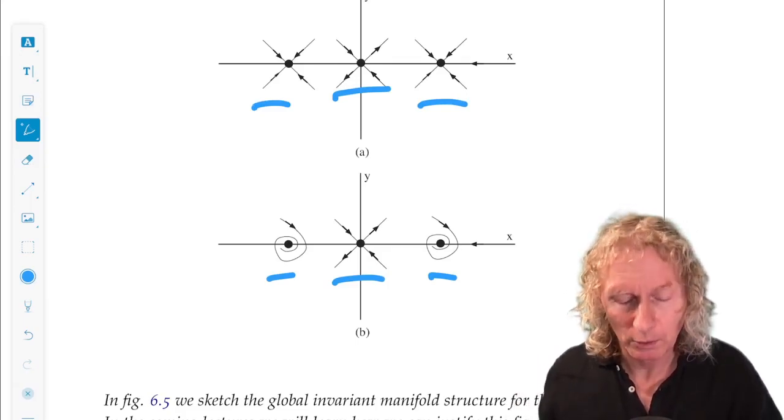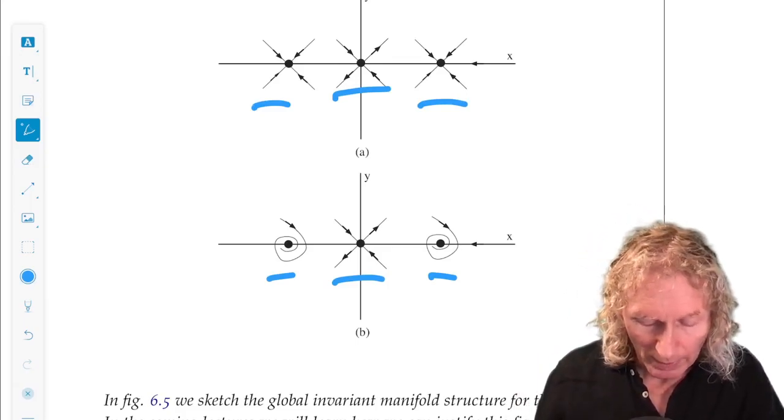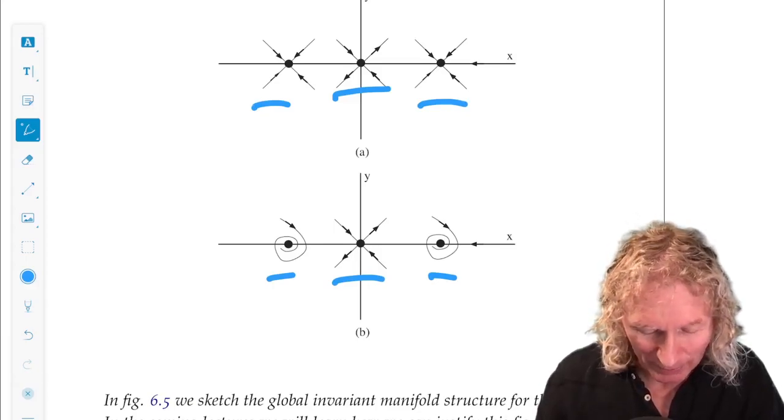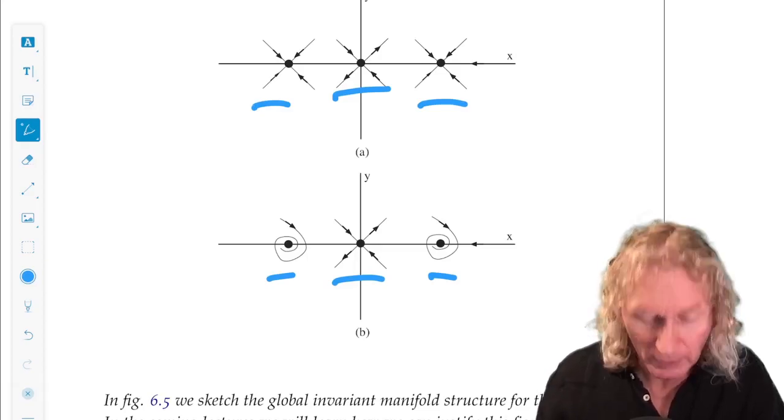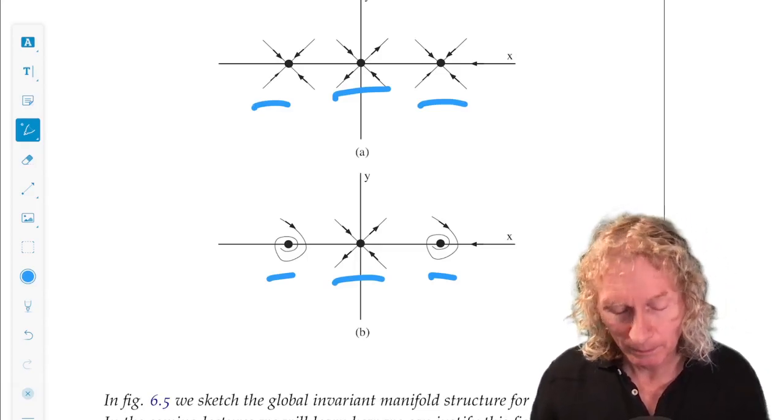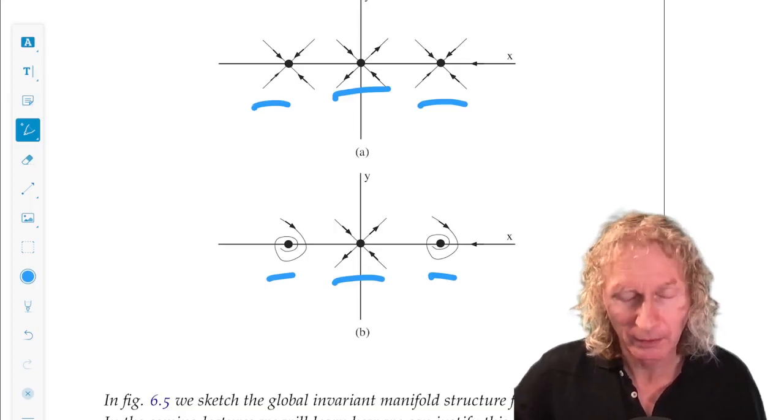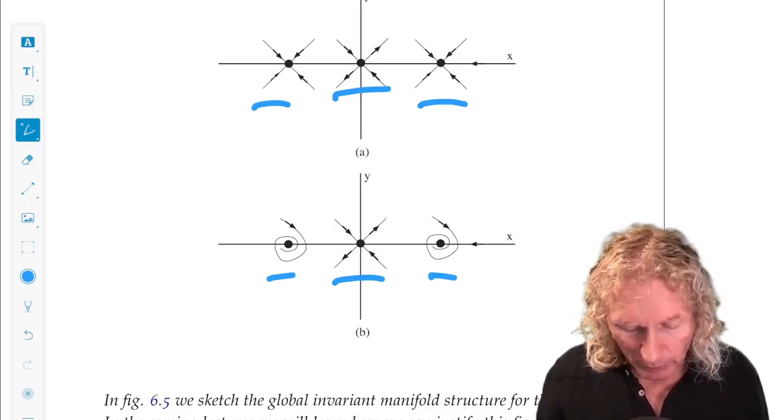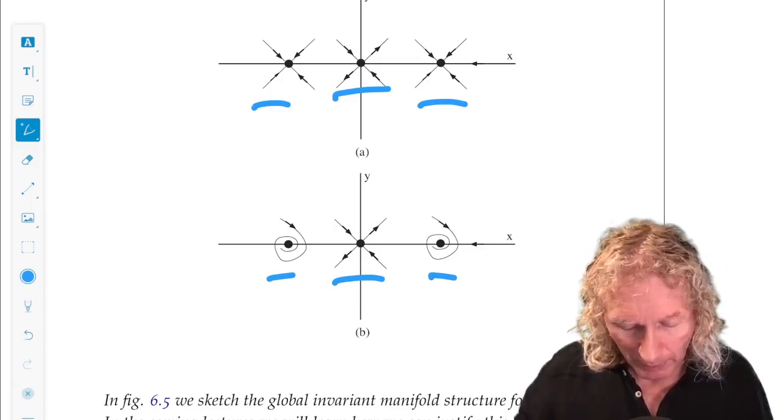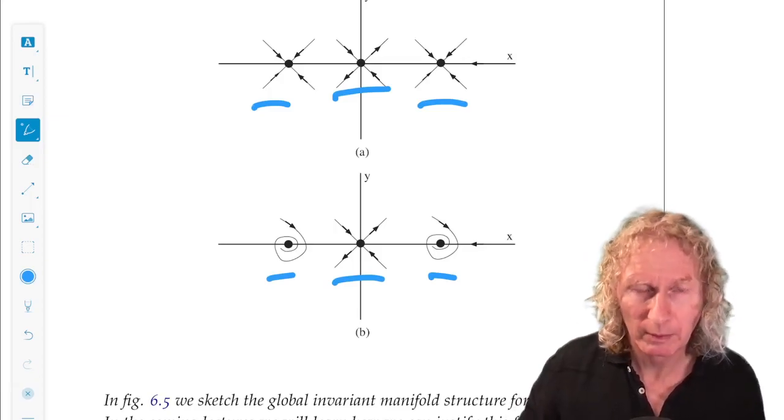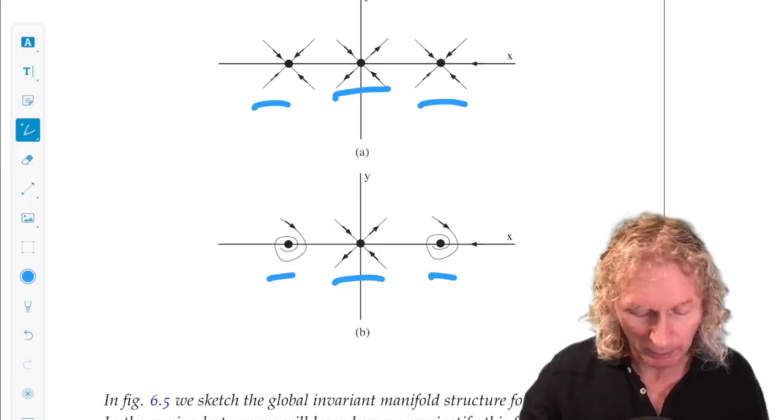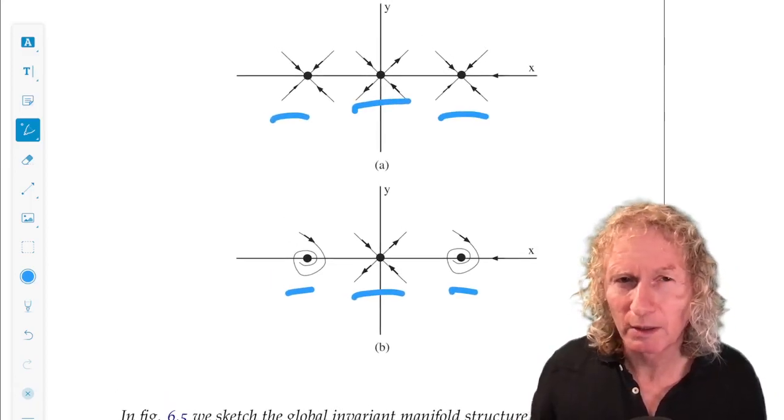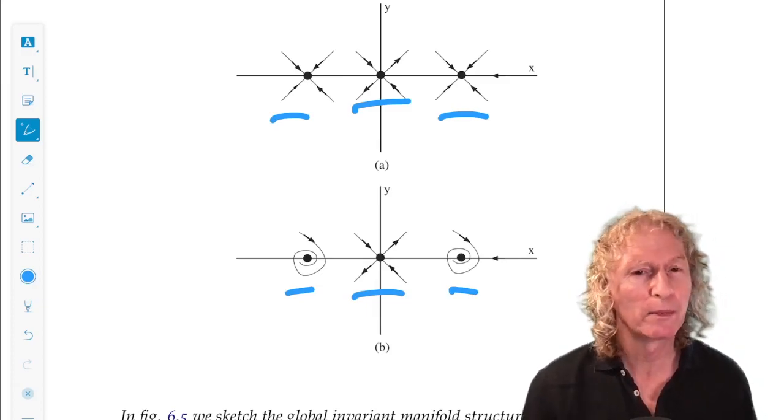A couple of things you need to think through for yourself. Do I have the spiraling in the right sense? Do I have the correct arrows on the manifolds? I do, but you need to understand why. And that's a nice exercise to think about. What about the angles between the stable and unstable manifolds of the origin? These are just the local stable and unstable manifolds. Do I have that about right? A lot of things you can figure out from the equations.